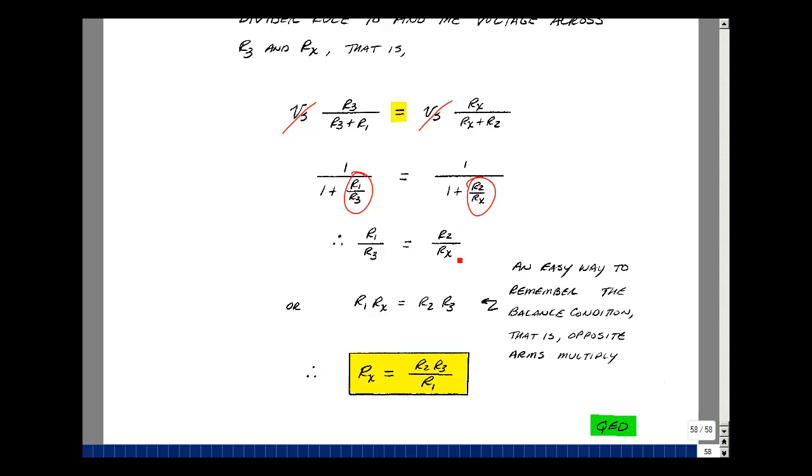Let's cross multiply. I've got R1 times Rx equals R2 times R3. I can solve for R sub x.